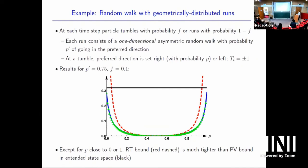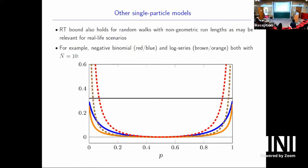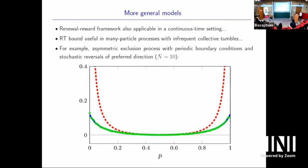You can also do cases where things can't be worked out so easily: non-geometric run-length distributions, continuous-time models, and many-particle models like the asymmetric exclusion process where the tumbling is a collective event — all particles change their preferred direction simultaneously. Again, you can work out the uncertainty analytically and bound it within this renewal framework.